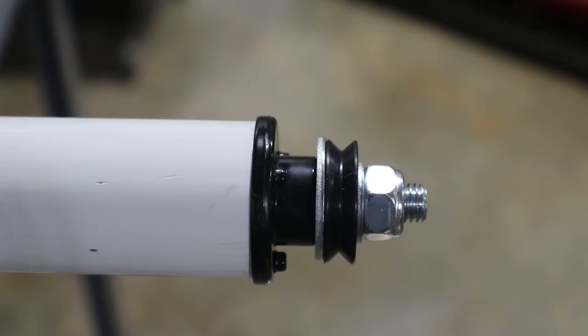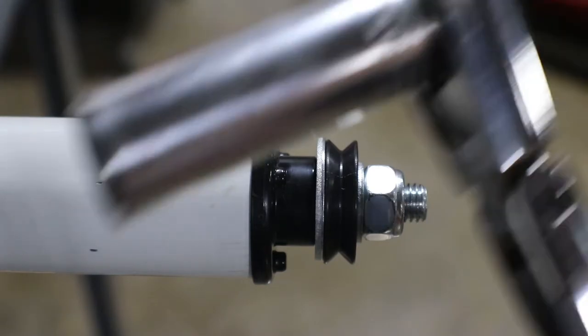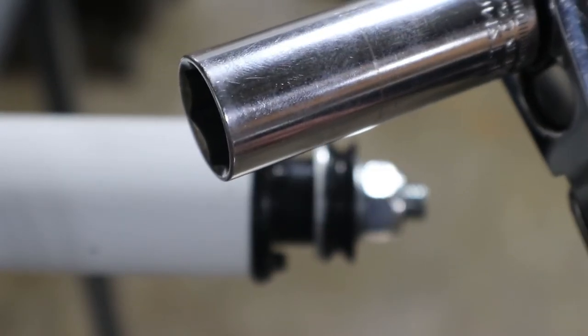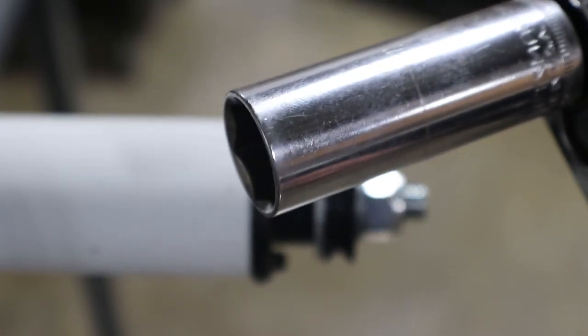To remove the pole end assembly, you will need a 17mm wrench. You will note that I am using a 17mm socket, but you can also use the wrench that came in the tool kit with your long arm to accomplish the task.